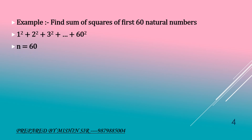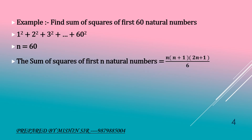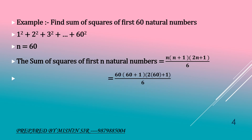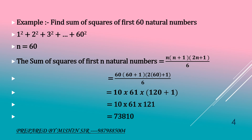We will be applying our formula. The sum of squares of first n natural numbers is equal to n into n plus 1 into 2n plus 1, whole upon 6. Substituting n equal to 60: 60 into 61 into 2 into 60 plus 1, which gives 10 into 61 into 121. Solving it, we get 73,810.